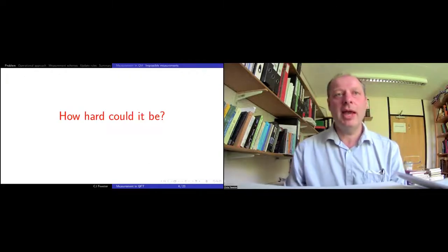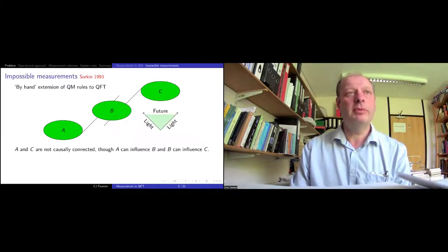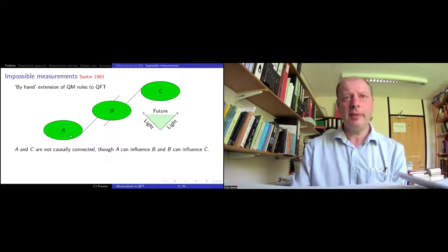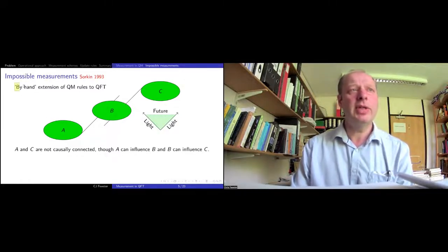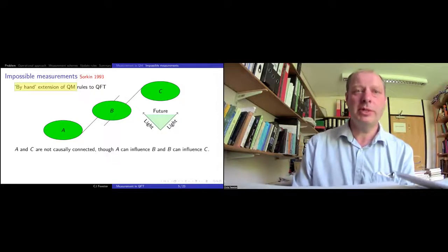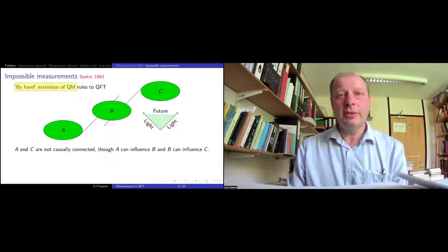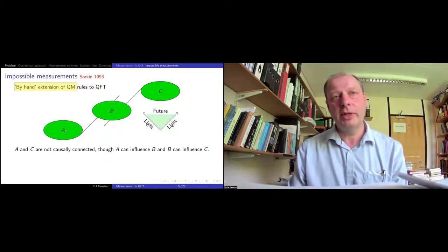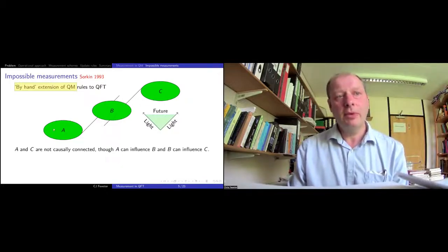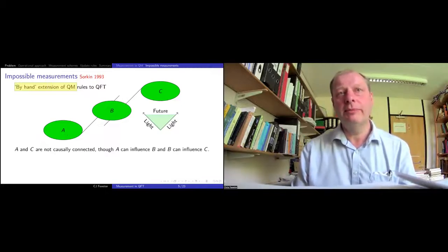You might ask, how hard could it be to solve this problem? One notable attempt was by Raphael Sorkin back in 1993. He had the idea of trying to extend the rules of quantum mechanics essentially by hand to quantum field theory, starting from the proposition that nobody seems to have written down what the rules of measurement are in QFT. He discovered something quite peculiar when you try to do that, illustrated by the following situation: imagine three space-time regions — Alice's region, Bob's region, and Charlie's region. The causal future of Alice's region intersects Bob's region, and the causal past of Charlie's region intersects Bob's region.